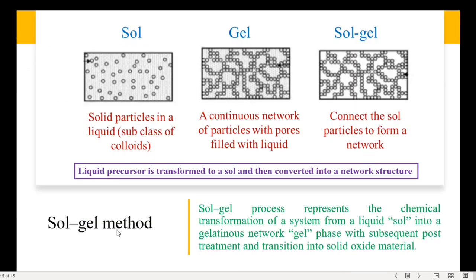The third technique is the sol-gel method. The sol-gel process represents the chemical transformation of a system from a liquid sol into a gelatinous network gel phase, with subsequent post-treatment and transition into solid oxide material. The first state represents a sol — solid particles dispersed in a liquid. The second represents a network of particles with pores filled with liquid. The last indicates the network formed by the sol particles; in other words, the liquid precursor is transformed to a sol and then converted into a network structure.